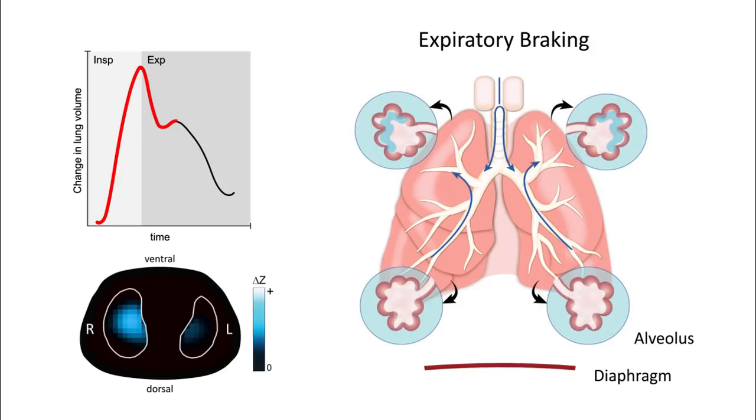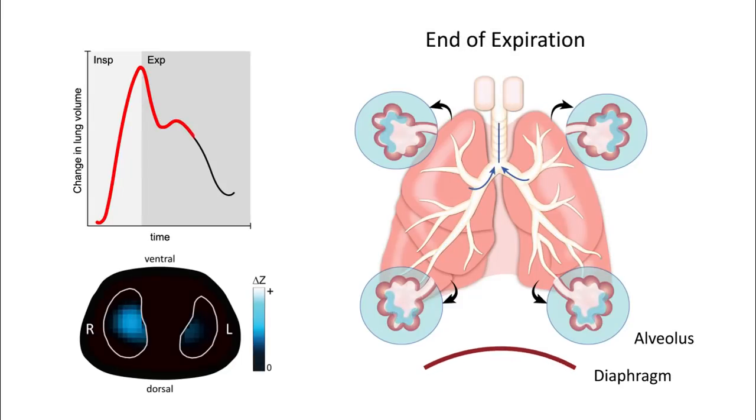The subtle but important movement of gas within the lungs during expiratory braking is something that has only been possible to see with our EIT methods. This represents a type of pendular flow in which the stable aerated lung regions redistribute gas to those alveoli at risk. Once the interstitium has been cleared of fetal lung fluid and stable functional residual capacity established, regular tidal breathing can occur.